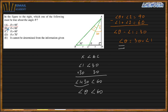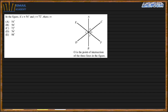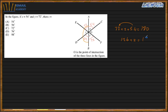Next question. x is 50° and vertical angles are congruent. y is 72°, and the vertical angle to it is also 72°. These three angles are linear, so their sum is 180°: 72 + z + 54 = 180, giving 126 + z = 180, so z = 54. The answer is A.